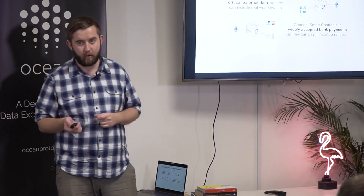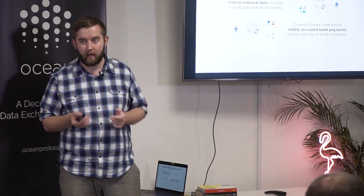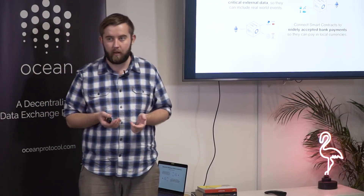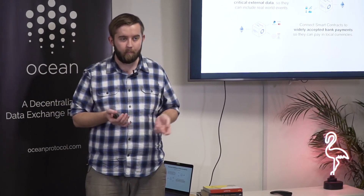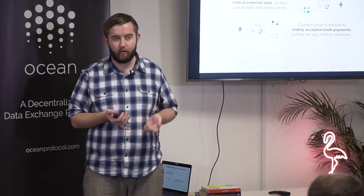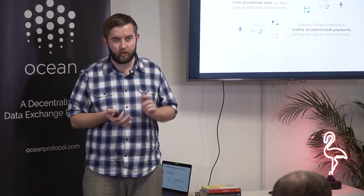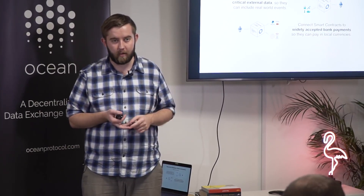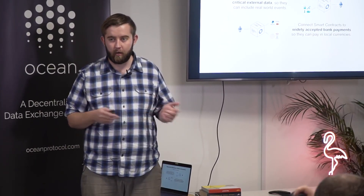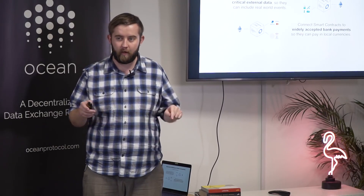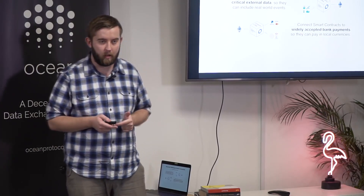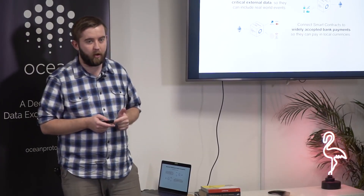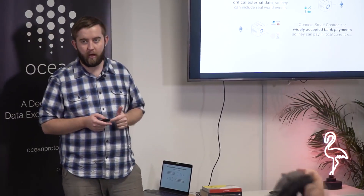Once smart contracts have inputs and outputs, then they can become the dominant form of digital agreements in the financial industry, insurance, and trade finance. Until smart contracts have the ability to interface with useful inputs and outputs, it's going to be very difficult for them to do anything other than move tokens around.